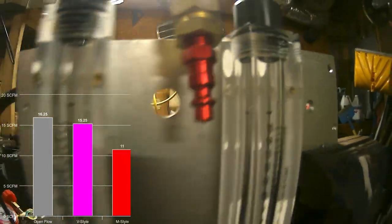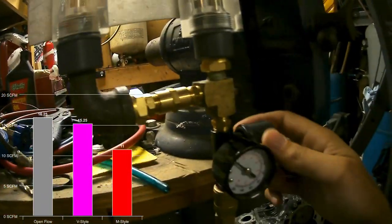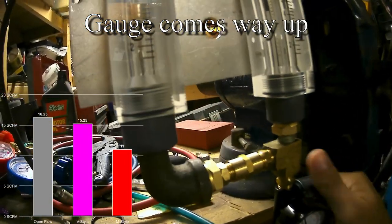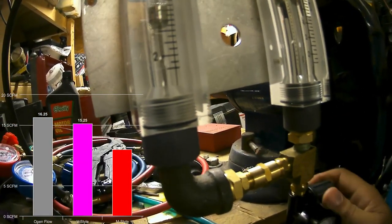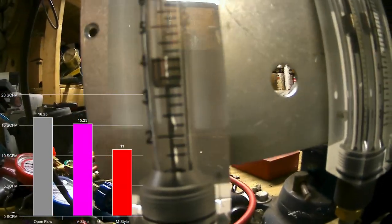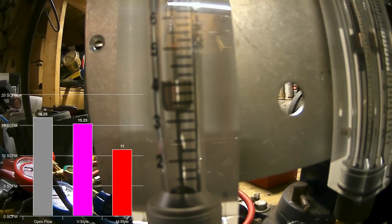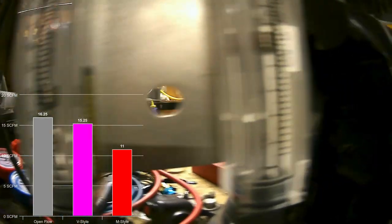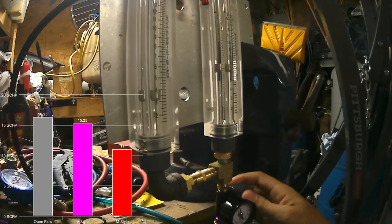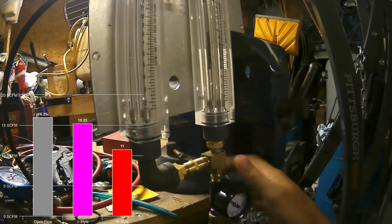So here's our M-style, and this is pretty dramatic. Watch the gauge, and you see it come way up. And then our left rotometer shows right about four SCFM, maybe four and a quarter, and the right one is six and three quarters, so 11 SCFM.